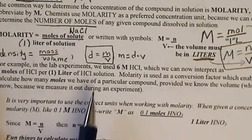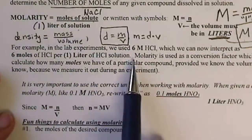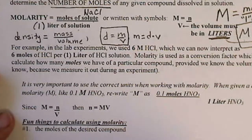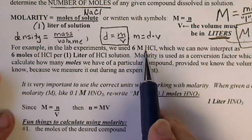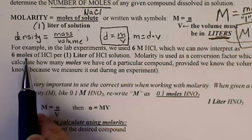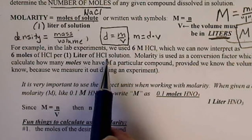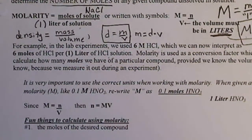So for example, we could use a 6 molar hydrochloric acid solution. So capital M means we would have 6 moles of HCl for every 1 liter of solution. Now we don't always use 1 liter.